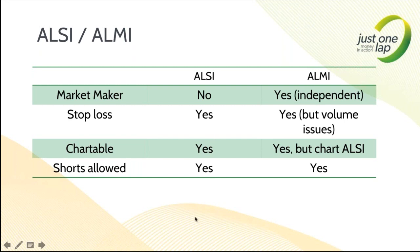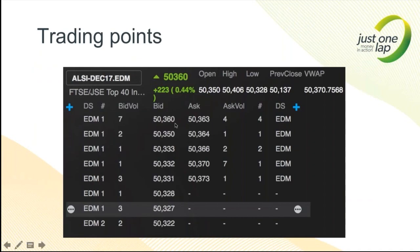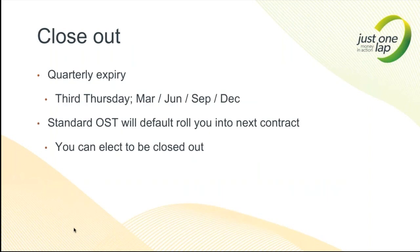Shorts are allowed — selling something you don't own so that you make profit on the downside. You can make a profit as something is falling. You would sell at 50,360 and have a position of minus 1. As it falls 100 points, minus 100 points times your minus 1 position means you are plus 100 points. Futures contracts have quarterly expiry periods. For our contracts, that is the third Thursday of March, June, September, and December, typically happening at lunchtime.